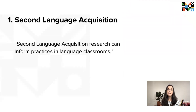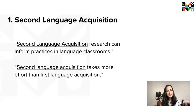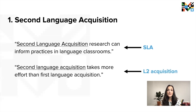You can usually tell whether someone is talking about the field or the learning process from context. For example, if someone says 'second language acquisition research can inform practices in language classrooms,' that's the field of study. On the other hand, if someone says 'second language acquisition takes more effort than first language acquisition,' that's the process. In writing, Second Language Acquisition, the field, is capitalized and usually abbreviated as SLA, while second language acquisition, the process, is lowercase and usually abbreviated as L2 acquisition — where L is for language and the two is for second.